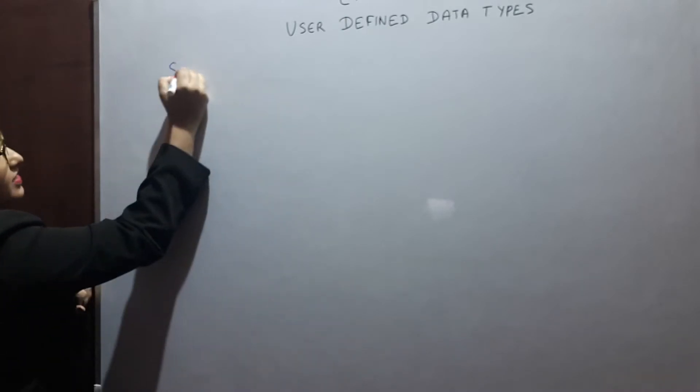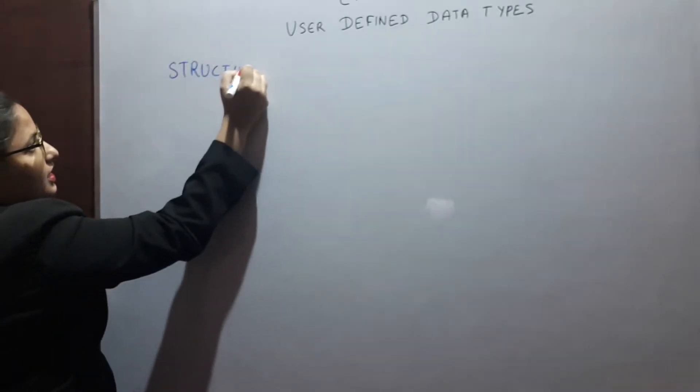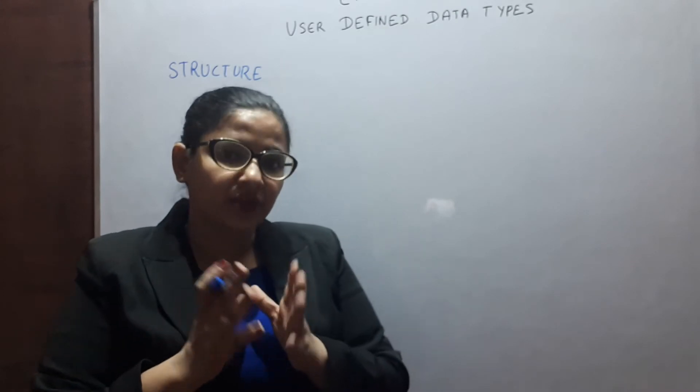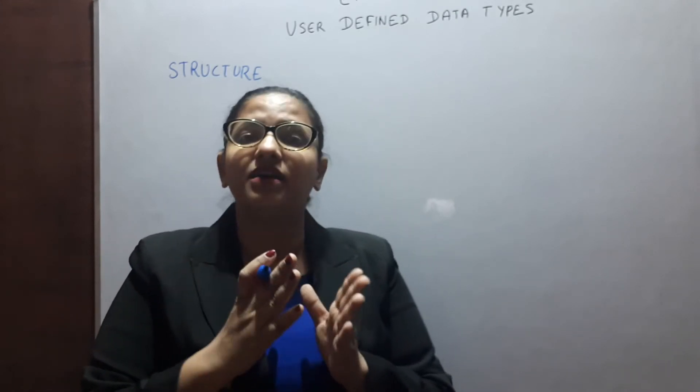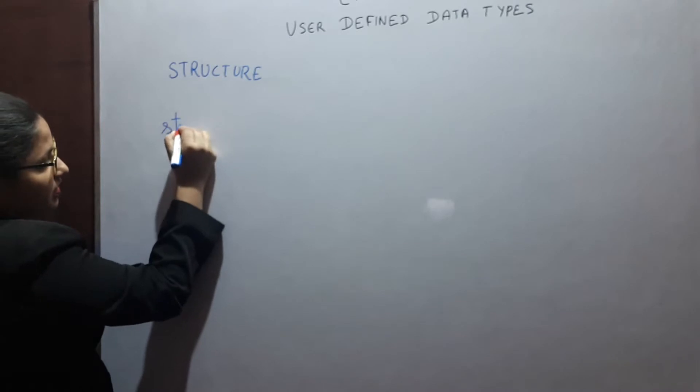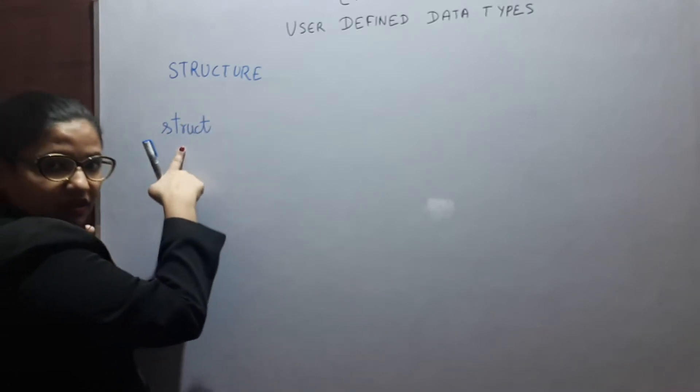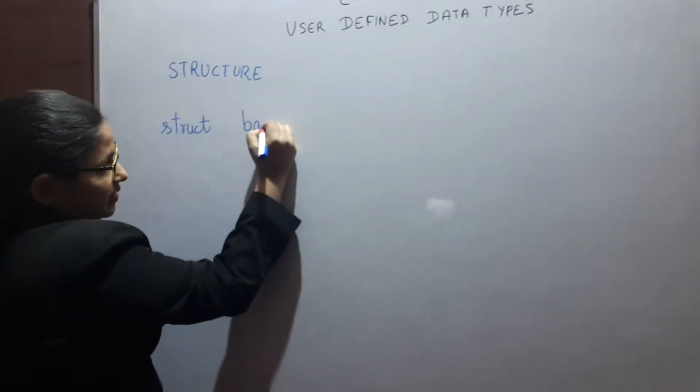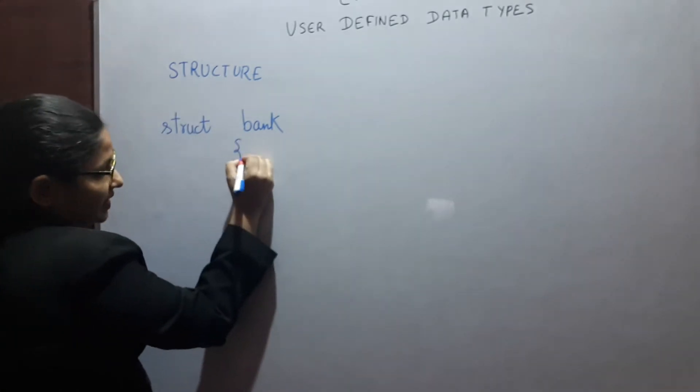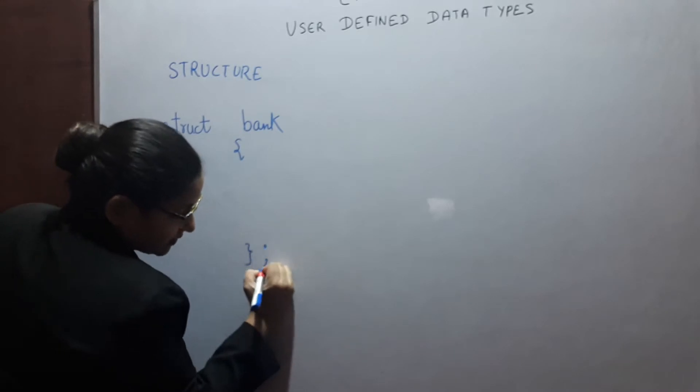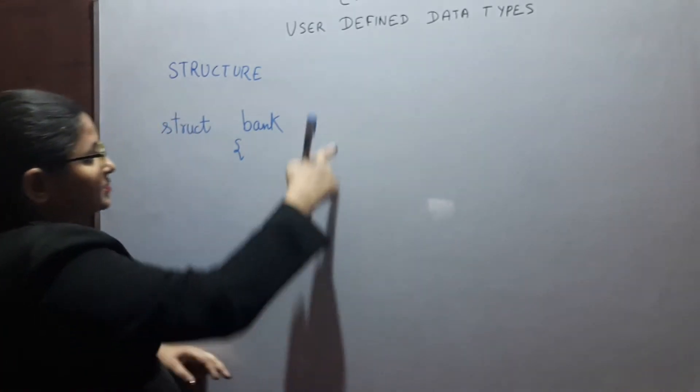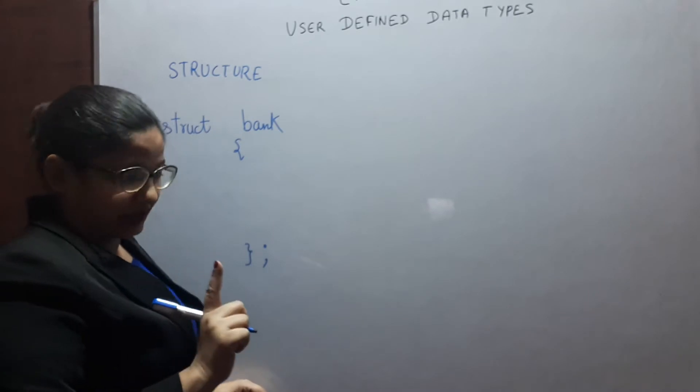Firstly we have structure. Structure is a method of packing together different data types in a single unit. For making structure, the keyword is struct. Struct, name of structure, for example here I am taking bank. Curly bracket opening, curly bracket closing and a semicolon. Semicolon means it's a statement. This whole thing is a single statement.